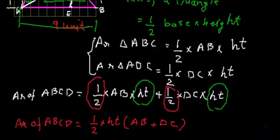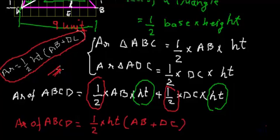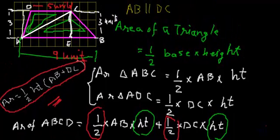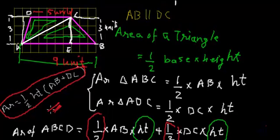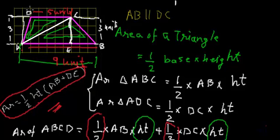So this is the area of trapezium ABCD. Let me write this formula so we can compare it with the figure. The area of a trapezium is one-half multiplied by height multiplied by (AB plus DC). The height is the gap between the two parallel lines. AB and DC are the two parallel sides, so AB plus DC is the sum of both parallel sides. Therefore, the area of a trapezium is one-half multiplied by the gap between the two parallel sides, multiplied by the sum of the two parallel sides.